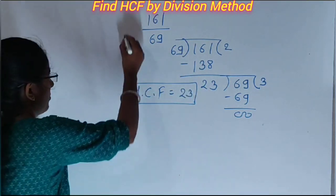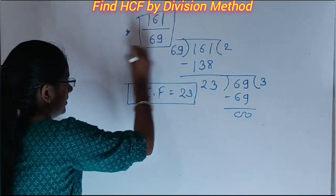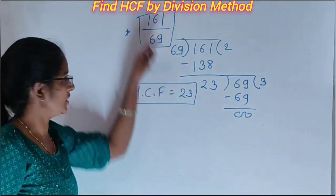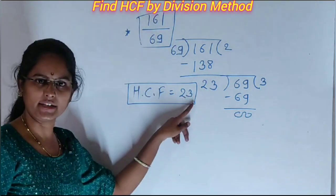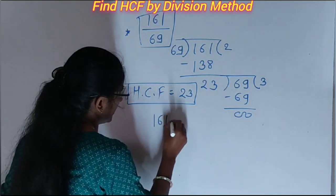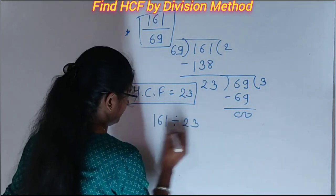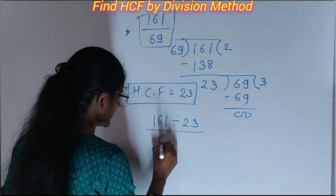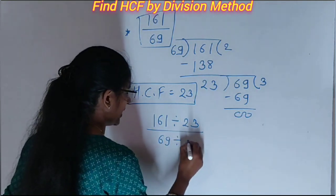Then to find the simplest form of this question, we divide these two numbers by 23. Then we get the simplest form. Write down 161 divided by 23 in the numerator, and 69 divided by 23 in the denominator.